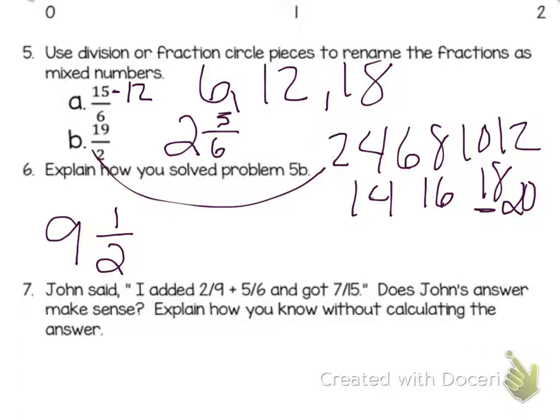Number 7. John said I added 2 ninths plus 5 sixths and got 7 fifteenths. Does John's answer make sense? Explain how you know without calculating the answer. No, it does not make sense because he added the denominators and we know when adding fractions you do not add the denominator. Or you might say 15 is not a common denominator for 9 and 6.